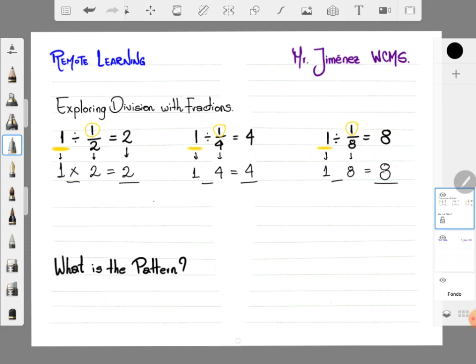This is very easy, it's multiplication. 1 times 2 equals 2, 1 times 4 equals 4, 1 times 8 equals 8.